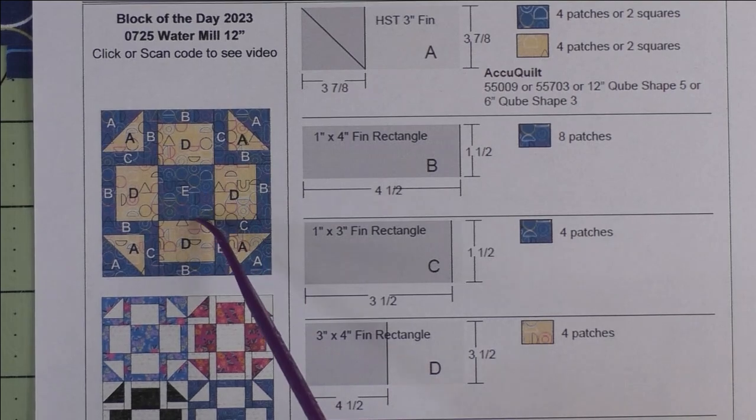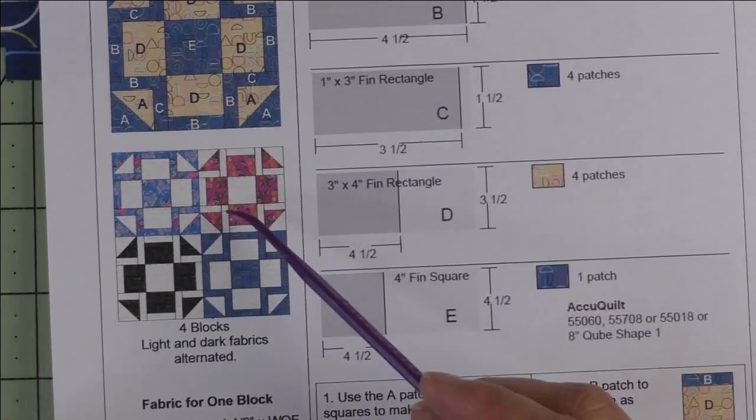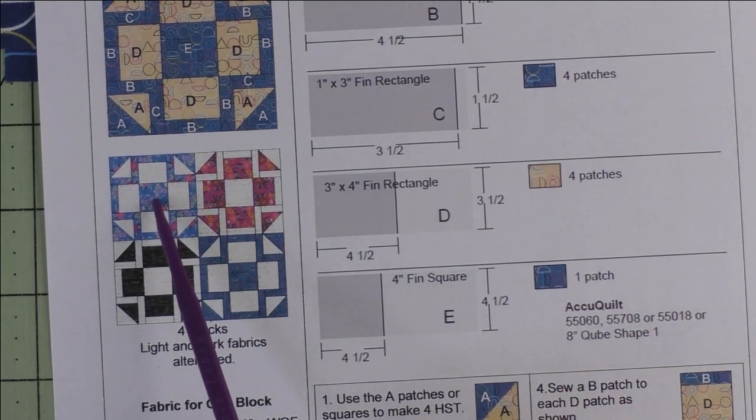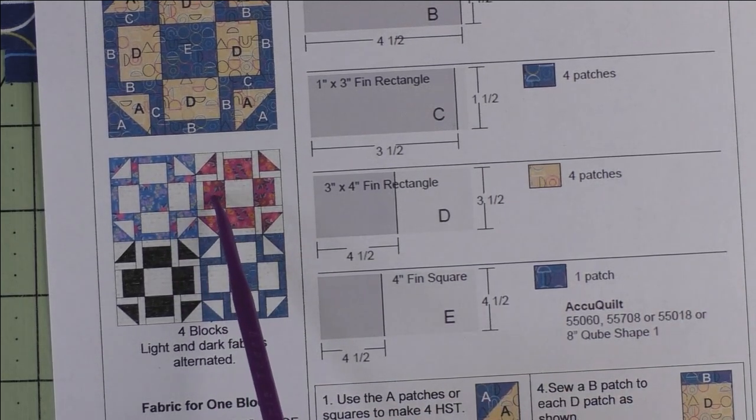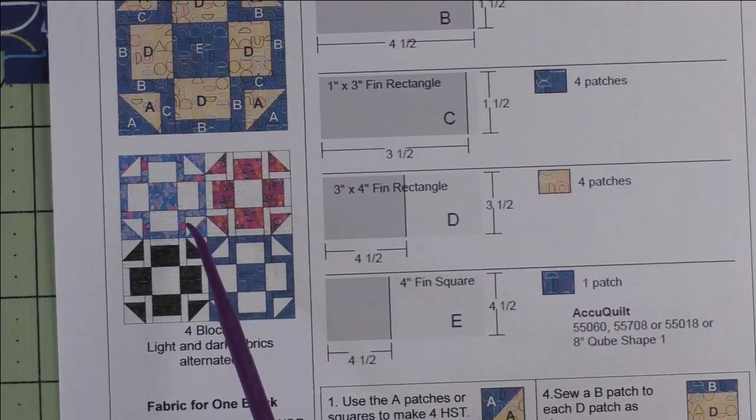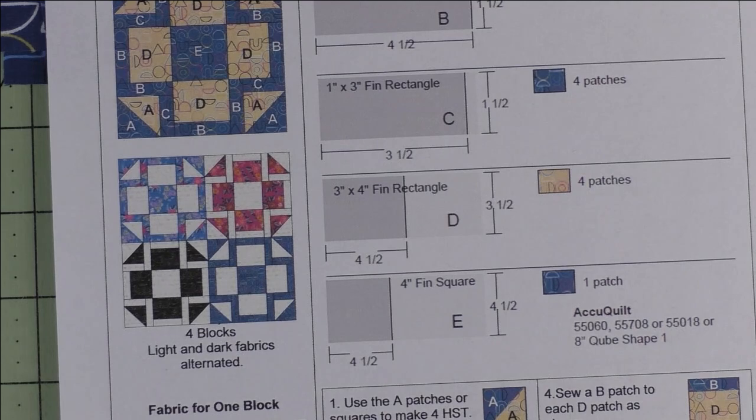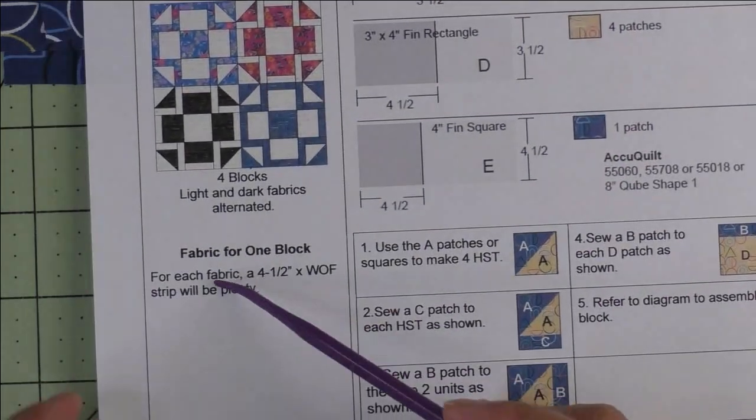Here are four blocks put block to block, but these blocks I've reversed the light and dark fabrics. I'll be showing you two blocks at the end that are reversed colors.